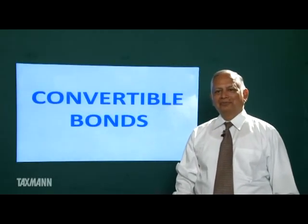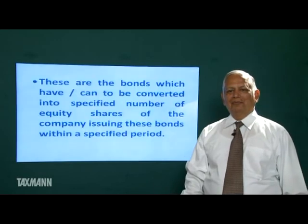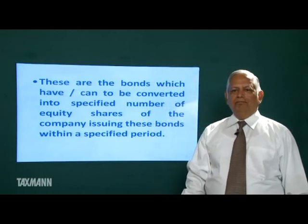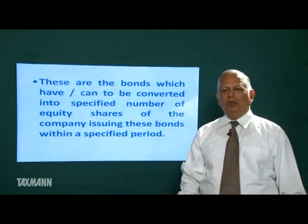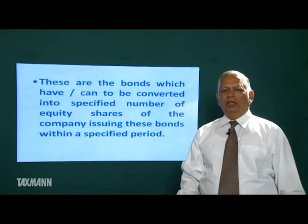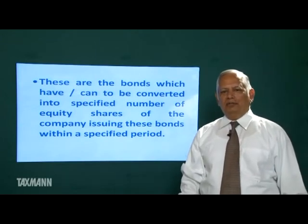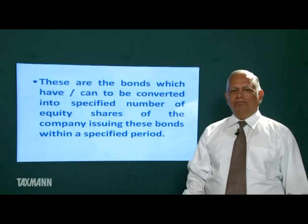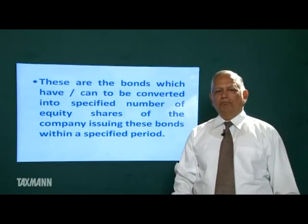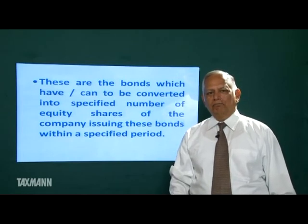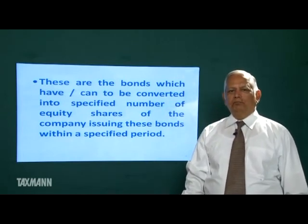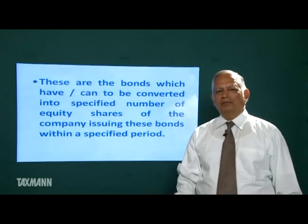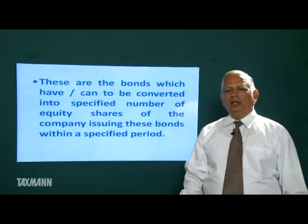Convertible bonds are bonds which have or can be converted into a specified number of equity shares of the company issuing these bonds within a specified period. For example, suppose a company issues a convertible debenture for Rs. 200, it can be converted into 10 equity shares at any time within the next 5 years. We will say these are convertible bonds.